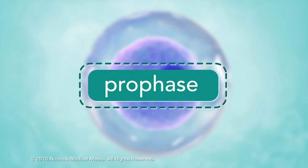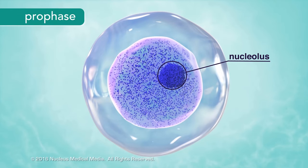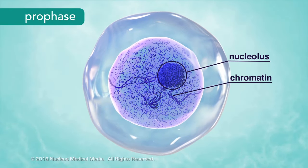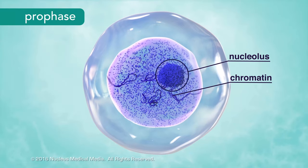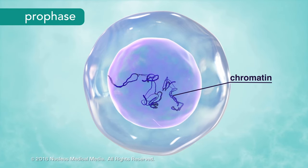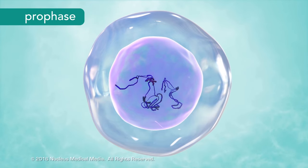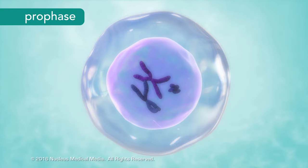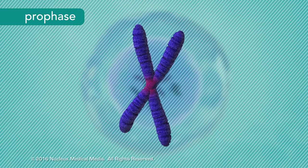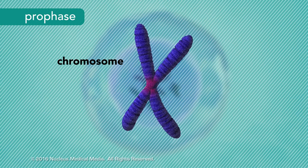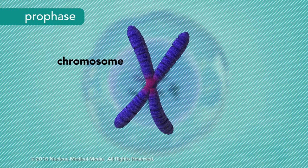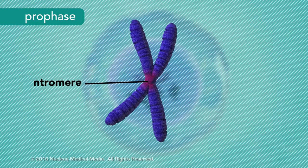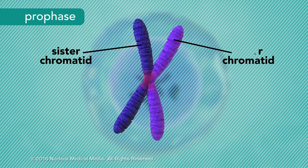Prophase is the longest phase of mitosis. Prophase is when chromatin begins to condense into the shape of chromosomes, and the nucleolus disappears. The previously replicated DNA coils tightly into sister chromatids. For the first time, you see individual chromosomes. In the center of each chromosome, a centromere attaches the sister chromatids together.